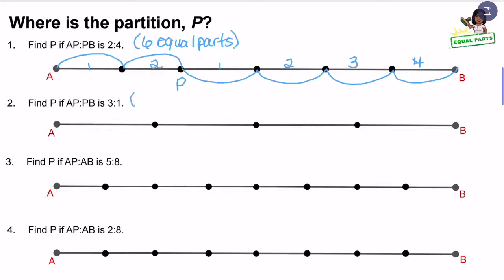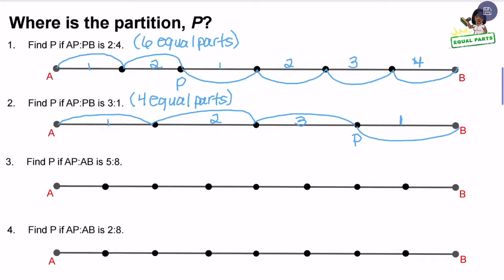For question two, it says find P if AP to PB is three to one. So that's going to be four equal parts. Let's partition this line segment to represent this given ratio. From A to P is three parts, and from P to B is one part.